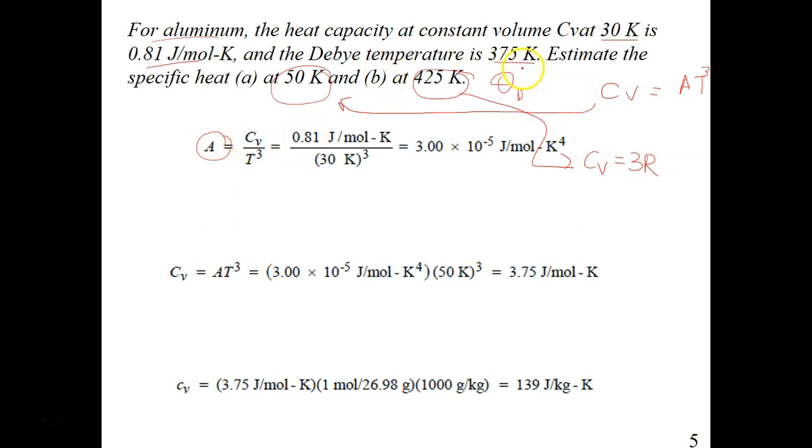Given to you is a temperature 30K and also the Cv. So you can calculate your constant A. Substitute all the values given, 0.81 joules per mole Kelvin and then T to the power of 3, you will use this 30 Kelvin. So you will get your A.